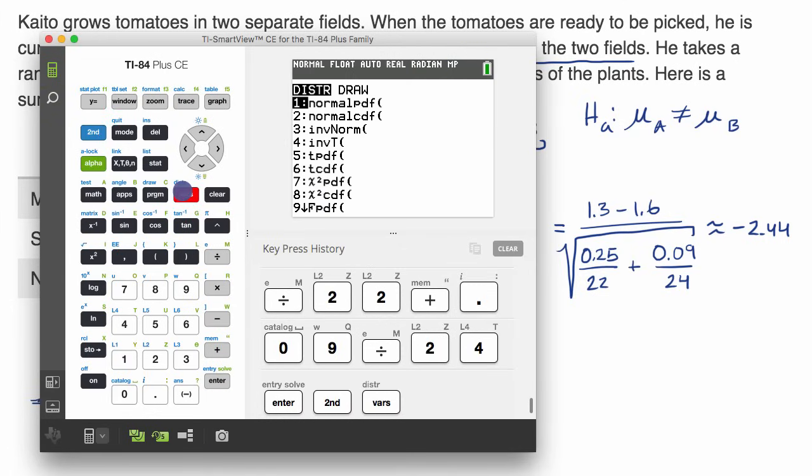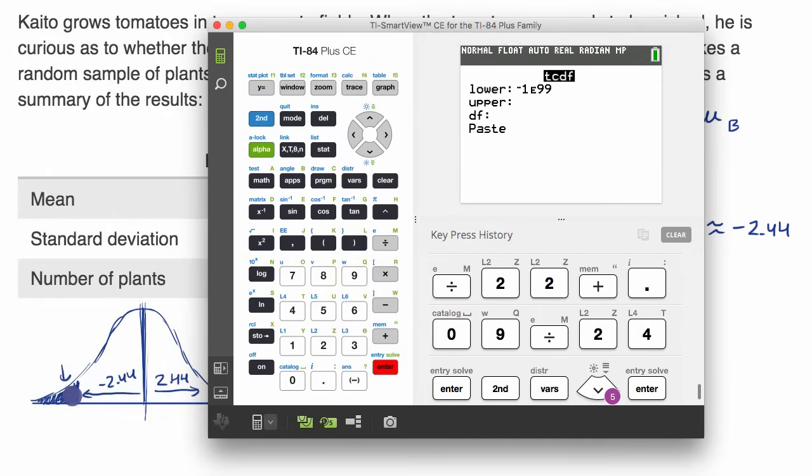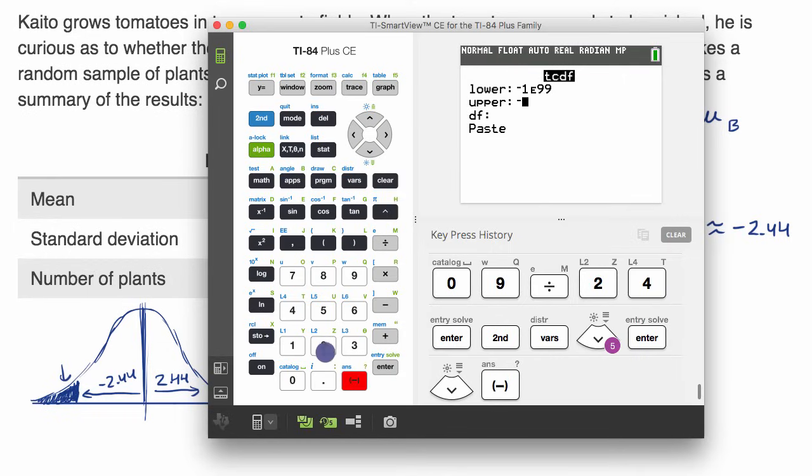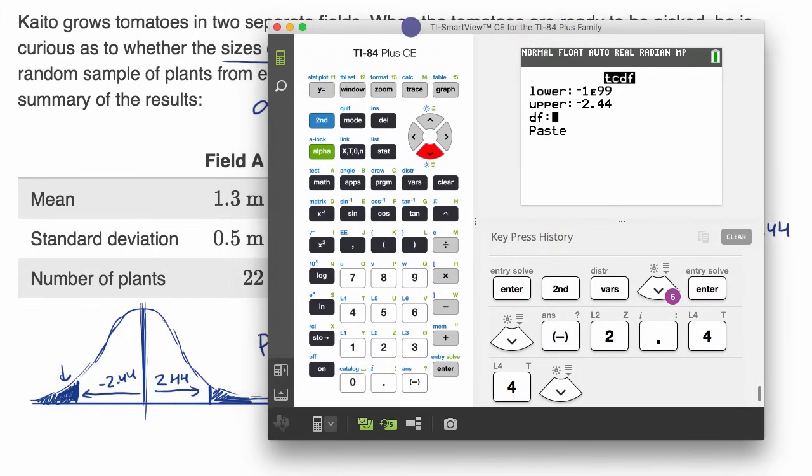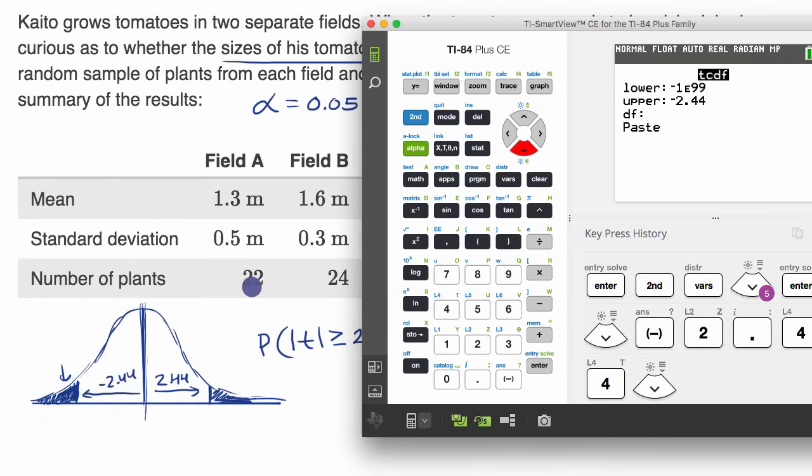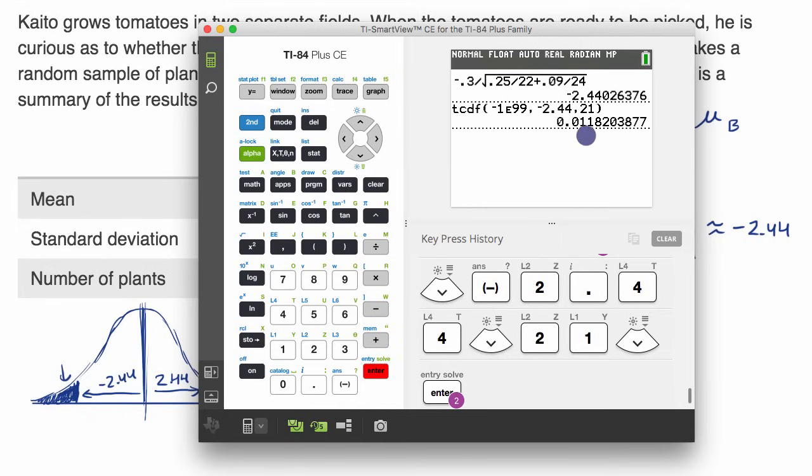I'm going to go to second distribution, the cumulative distribution function for our t-distribution. Since I want to think about this tail probability here, and then I'm just going to multiply it by 2, the lower bound is a very negative number, functionally negative infinity. The upper bound is negative 2.44. Now what's our degrees of freedom? If we take the conservative approach, it'll be the smaller of the two samples minus one. The smaller of the two samples is 22, so 22 minus one is 21. So put 21 in there.